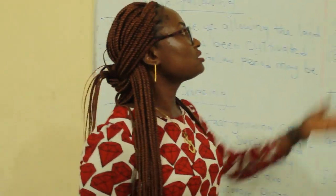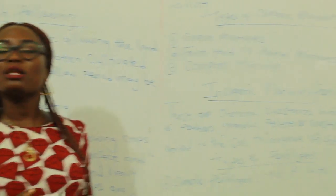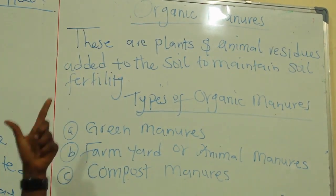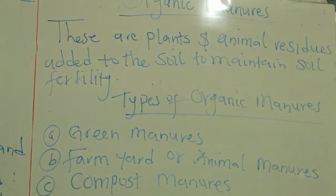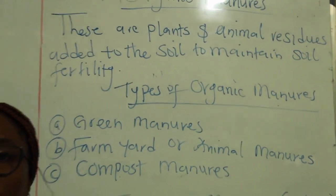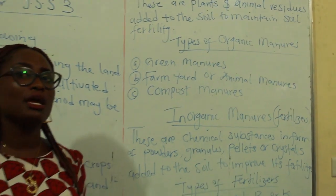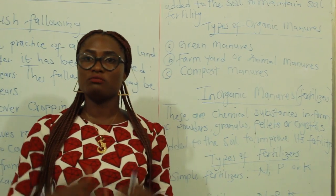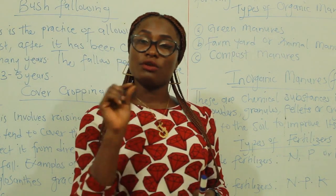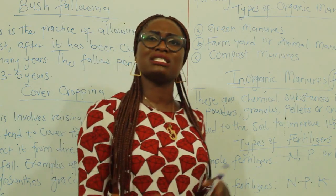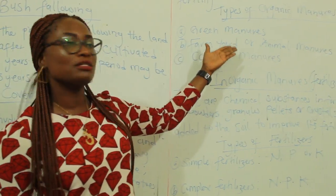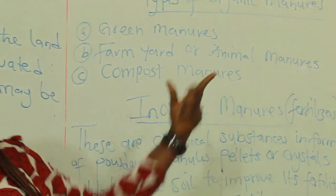Let's look at the fourth way, which is organic manures. What are organic manures? Organic manures are plants and animal residues added to the soil to maintain soil fertility. Take note — plants and animal residues added to the soil to maintain soil fertility. The types of organic manures are: green manures, farmyard or animal manures, and compost manures.